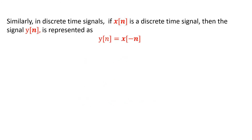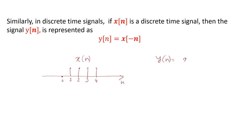This is y(t), which is the mirror image of x(t), or the reflected version of x(t). Similarly, in discrete time signals, if x(n) is a discrete time signal, then y(n) = x(−n), that is y(n) is the reflected version of x(n). We will take one example. Suppose this is x(n). Say y(n) = x(−n). So the 0 point will be at 0 only. The signal at 1 will appear at minus 1, the signal at 2 will appear at minus 2, the signal at 3 will appear at minus 3, and the signal at 4 will appear at minus 4. So this is the reflected version of x(n), that is y(n).